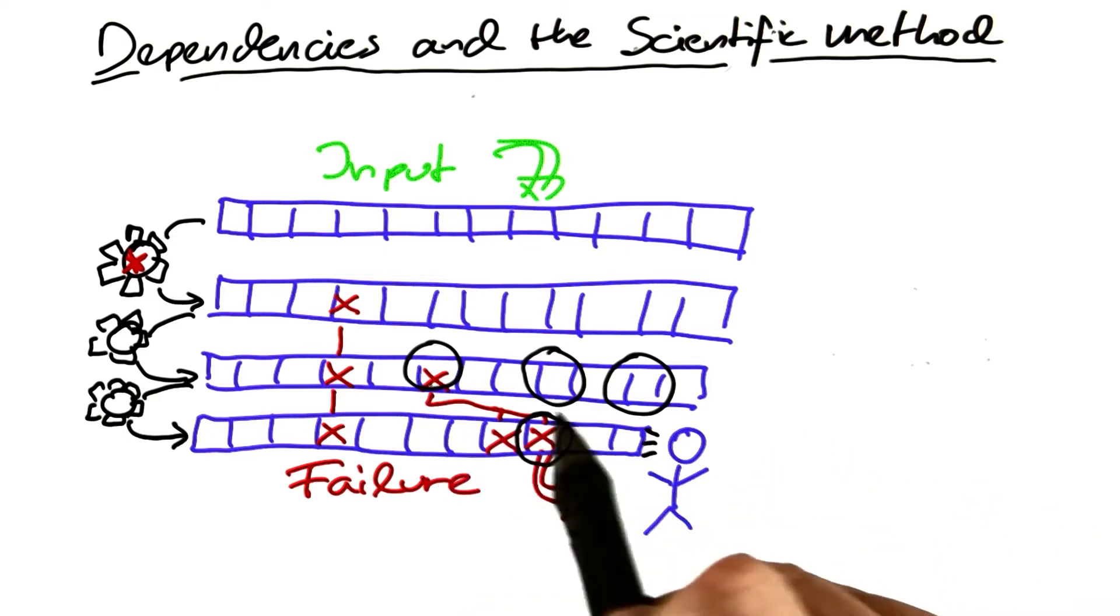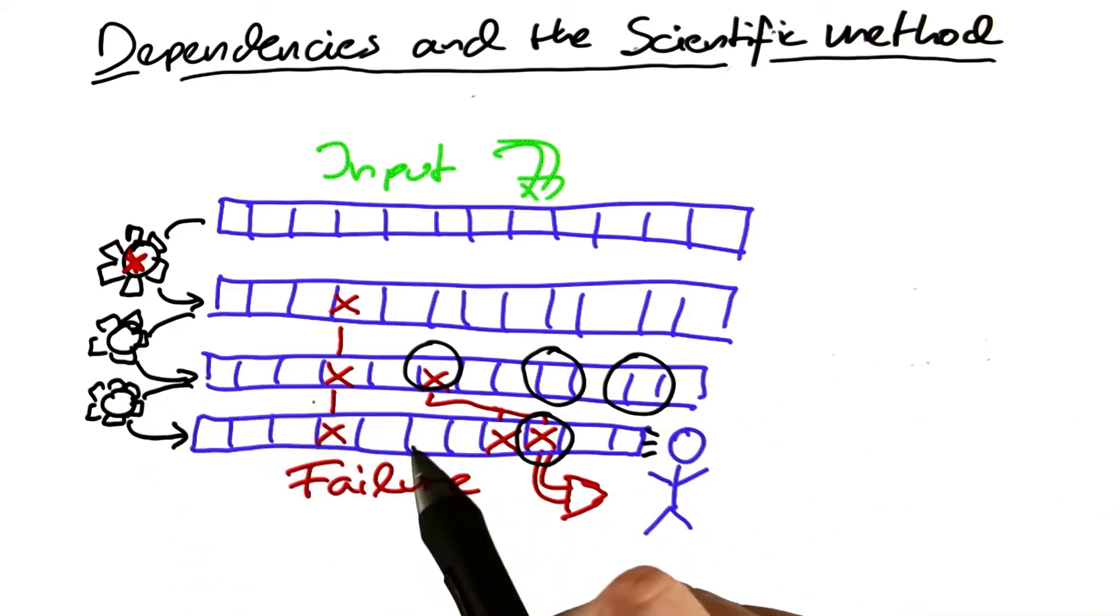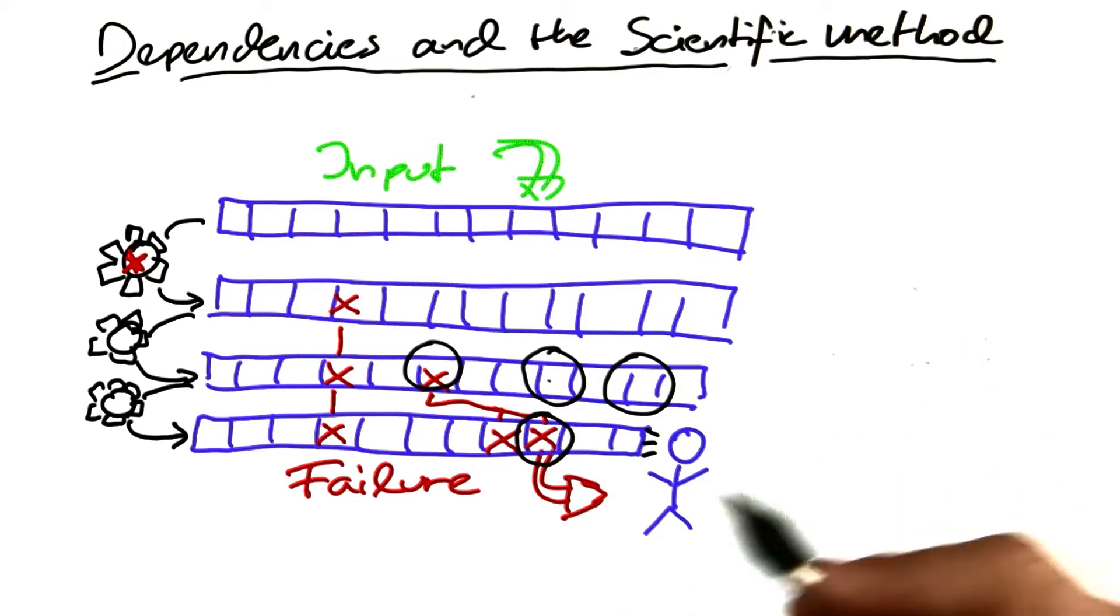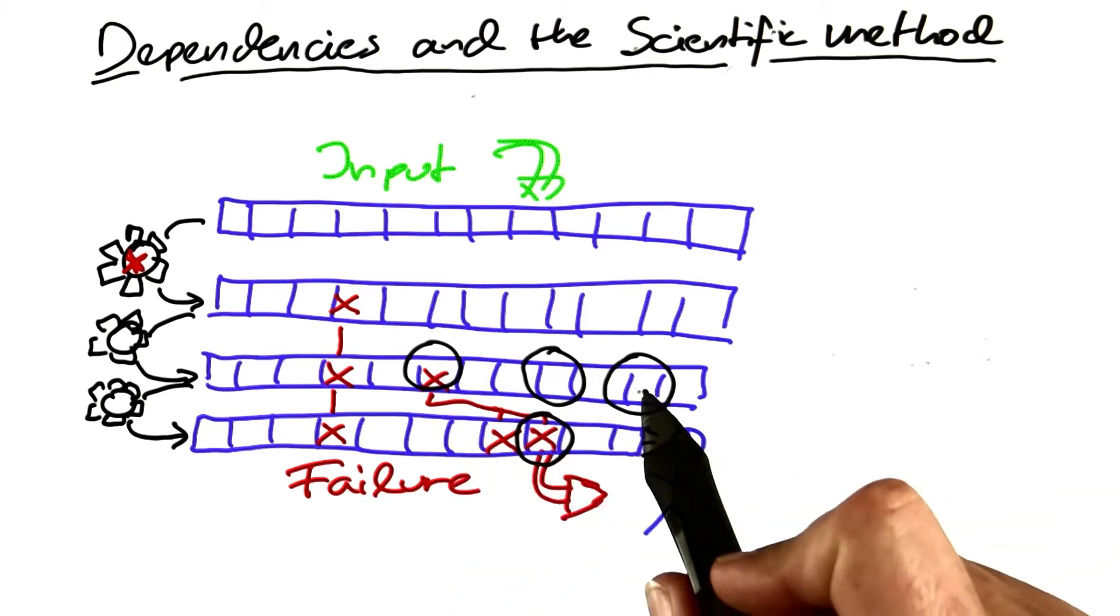And we determine these possible states as well as the locations in the program where they would be caused through the dependencies. So if we see an error down here, it could have come from here, from here, or from here.